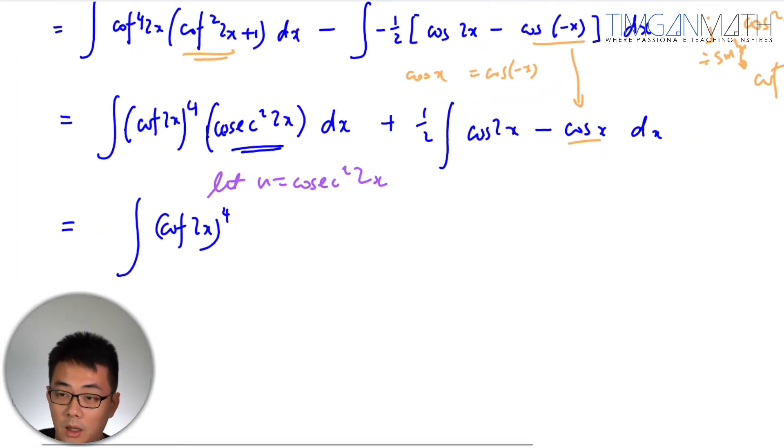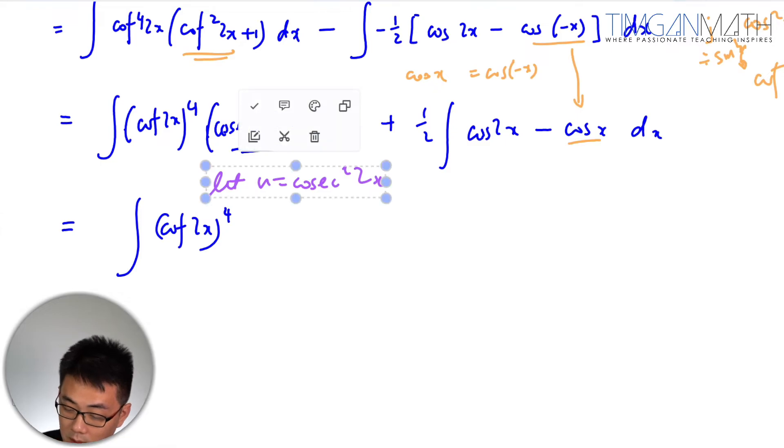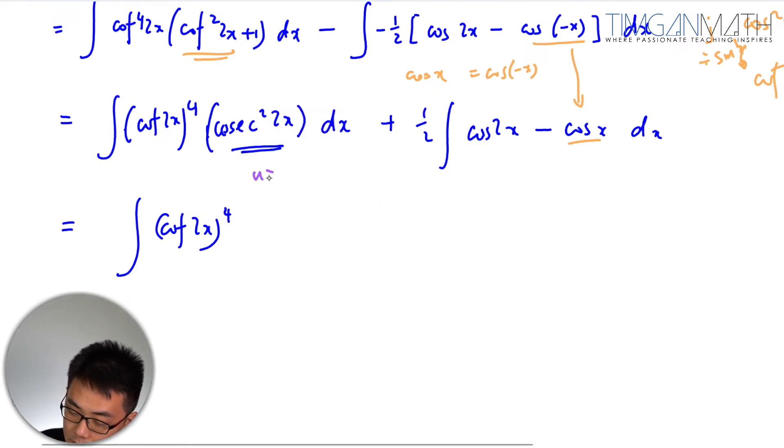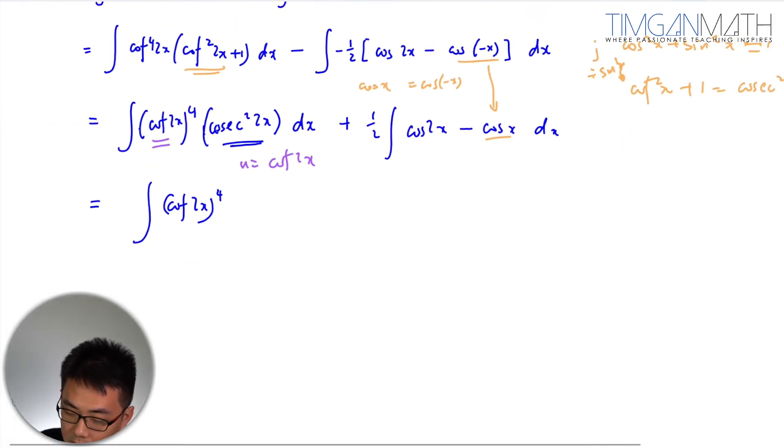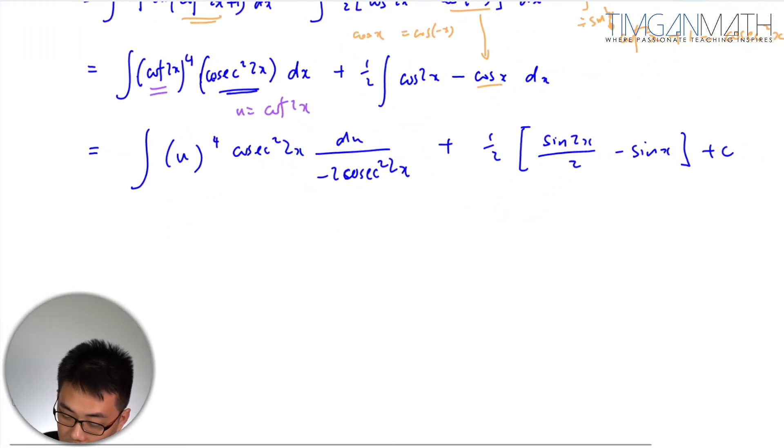Let u equals to cosecant squared 2x. Then in this case here we'll get this cot to the power 4. Sorry let u be cot 2x because differentiating this will give you cosecant squared and we could cancel. So this will just be our u the power 4 cosecant squared 2x.